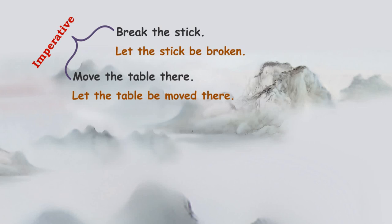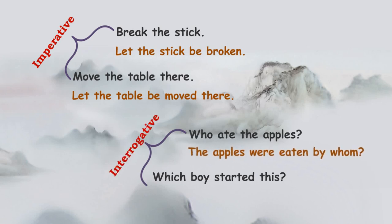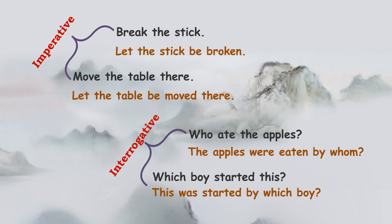These are interrogative sentences. 'Who ate the apples?' and 'Which boy started this?' can also be transformed. In interrogative sentences too we can do it. 'Who ate the apples?' becomes 'The apples were eaten by whom?' Similarly, 'Which boy started this?' becomes 'This was started by which boy?' The object is shifted and comes first. This is how all the transformations are done with reference to voice.